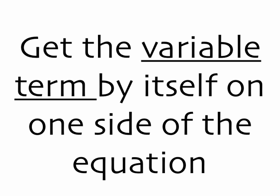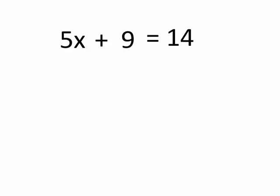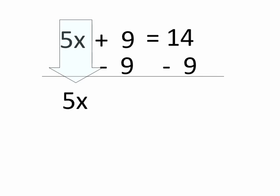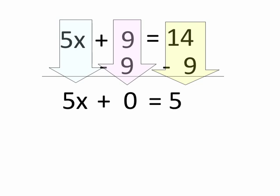Our next step is to get the variable term, that's the chunk that has the x in it, by itself on one side of the equation. So in the last step that we did, we were left with 5x plus 9 equals 14. I'd like to apply the properties of equality so that the 5x is all by itself on one side of the equation. Right now, 5x has 9 added to it, so I'm going to need to subtract 9 from both sides of the equation. If I take away 9 from the left side, I need to take away 9 from the right side to keep my equation balanced. When I do that, I have still 5x on the left-hand side. Positive 9 and negative 9, those add up to 0. And then on the right-hand side, 14 minus 9 gives me 5.